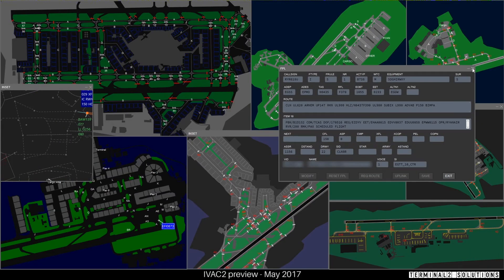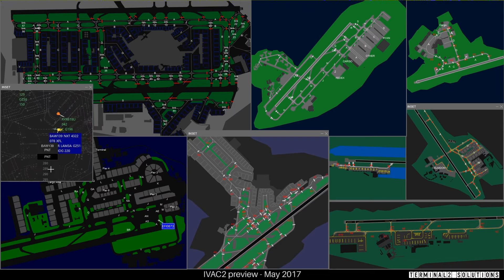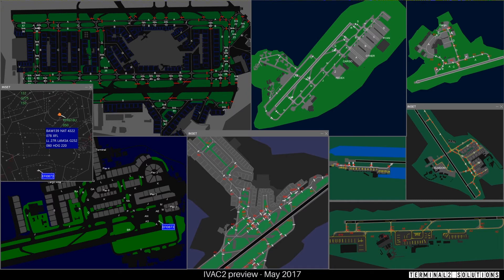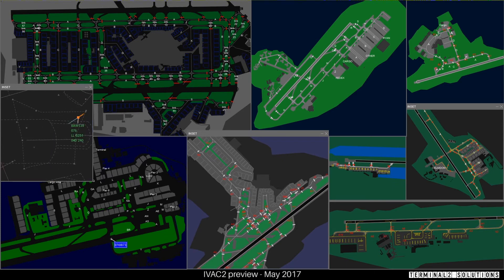Up to now all the aircraft on our maps have been on the ground, so the tags — the labels that describe the aircraft — have been fairly minimal. If the aircraft are in the air, it's up to the FIR definition team to define how they want the label to look. Just as with the maps, there's great flexibility.